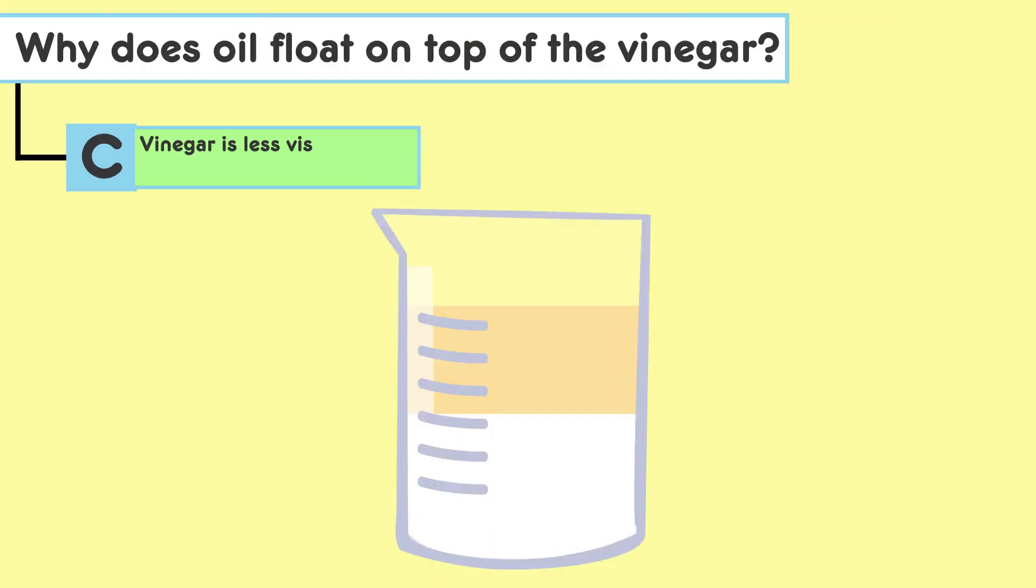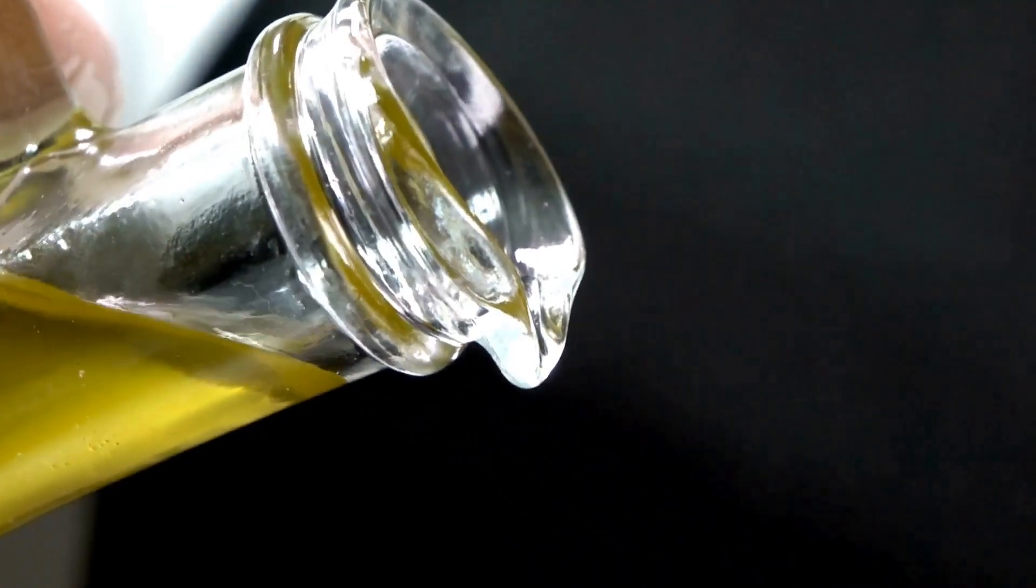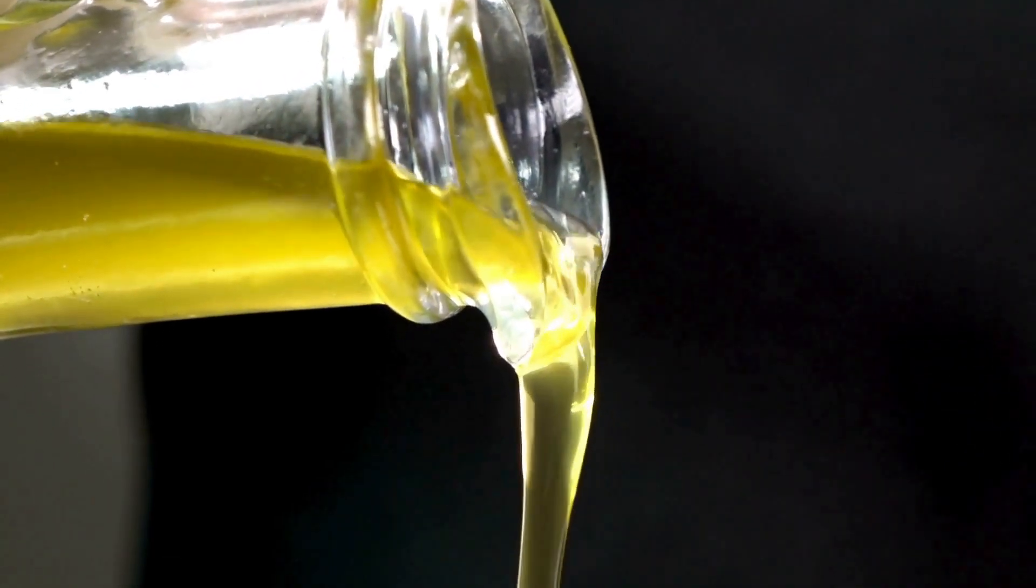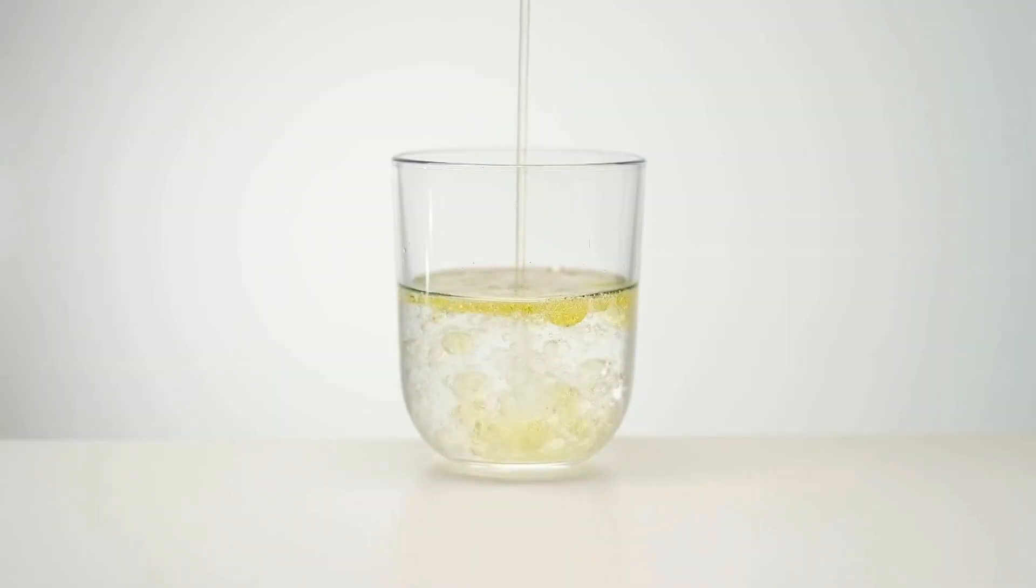C. Vinegar is less viscous in oil. Let's investigate. Compare the viscosity levels of vinegar and oil. Now let's analyze. Discuss how viscosity influences the floating or sinking of liquids. Here's a tip. Lower viscosity fluids typically underlay higher viscosity fluids if density is not a factor.